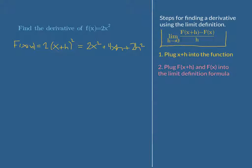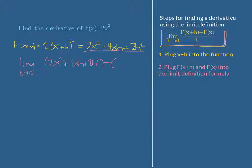Step two is to plug f of x plus h — what we just found — and f of x into the formula. So we have the limit as h approaches zero of our f of x plus h, which is 2x squared plus 4xh plus 2h squared, minus our original f of x, which is 2x squared, all divided by h. If you look here, we cannot plug zero in for h yet because we would have zero in our denominator.